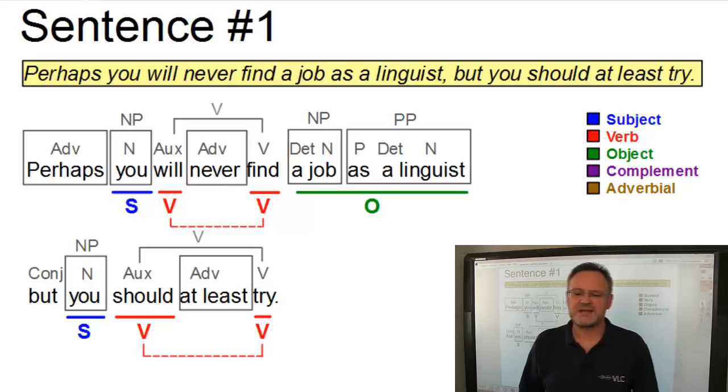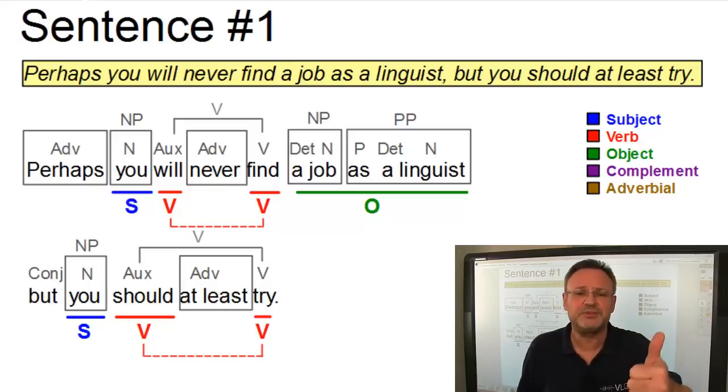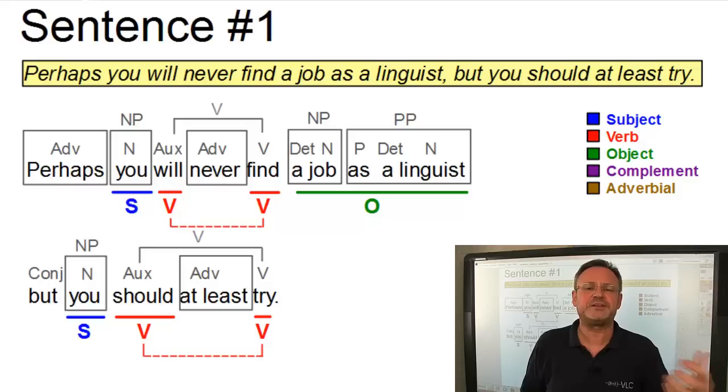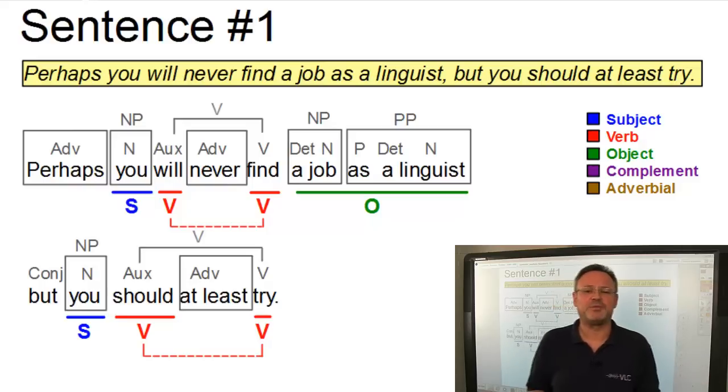A job as a linguist. The question arises here whether the noun phrase a job and the prepositional phrase as a linguist constitute one unit, or whether we should analyze this as a combination of an object plus an adverbial. It depends on how you understand the sentence. Does, as a linguist, describe the action of finding, that is, you find a job as or even because you're a linguist?